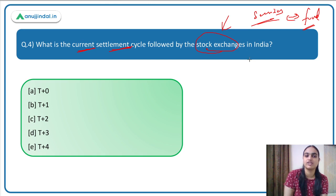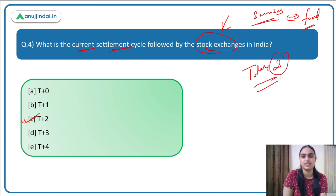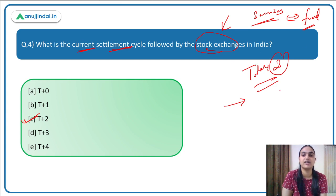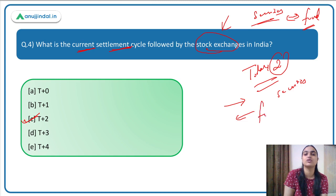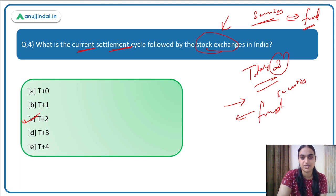The major stock exchanges in India are currently following the T+2 settlement cycle — the answer is option C. If today a transaction is happening, the settlement should take place within two days. If you are buying, the securities should appear in your DMAT account within two days. If you are selling, the funds should appear in your account within two days. That is the T+2 settlement cycle.